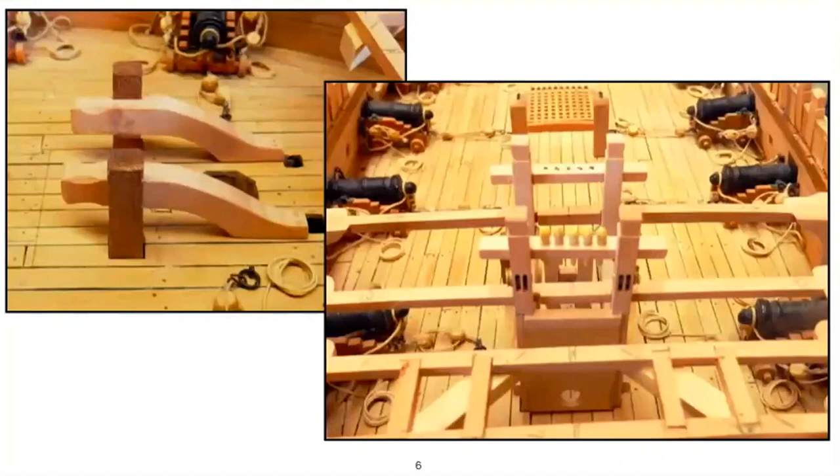Forward of the stove on the gun deck are the forward riding bits, which are shown here on the slide on the left. The bit pins, that's their vertical timbers in the darker wood, pass through the gun deck there and are attached to the deck beams of the main deck below them, so they could actually take a huge amount of strain.